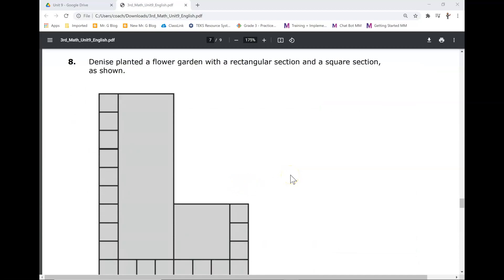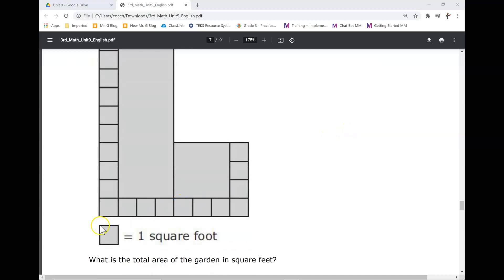Number eight. Denise planted a flower garden with a rectangular section and a square section as shown. Each square equals one square foot.